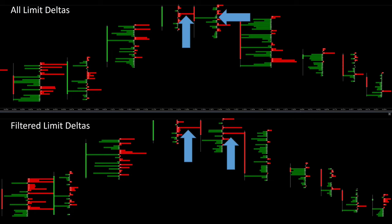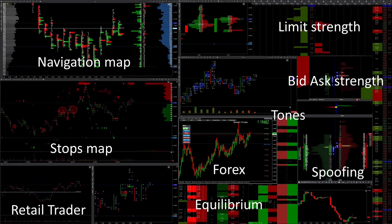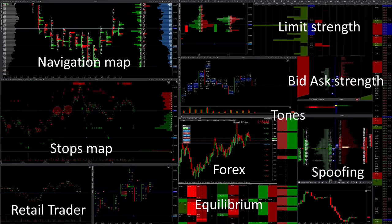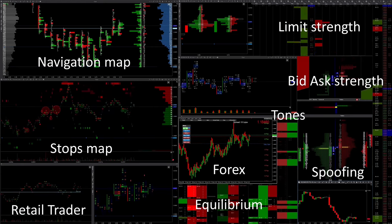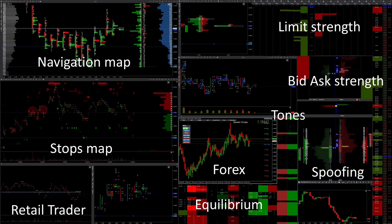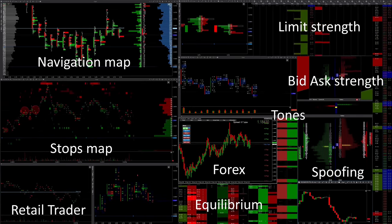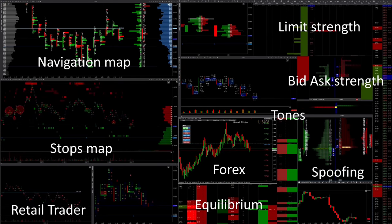I think you can see how important it is to get the right information about the current market situation. Because only those can react correctly who also have concrete market data. You are probably now able to see my main trading screen a little better. At the top left you can see my navigation map, where my specially filtered limit orders are listed. Below is my stop card; here I can see immediately when the retail trader's stops are triggered. Below I can see which positions the retail traders enter the market with. At the top right I can see the strength of the limit orders and below that the strength of the market orders.